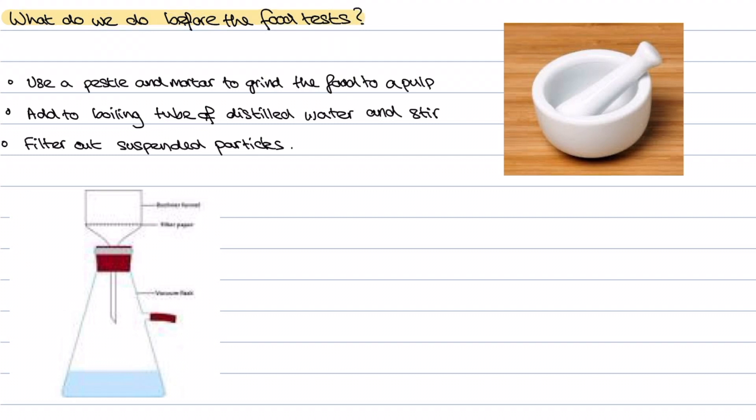First thing that we need to do is we use a pestle and mortar to grind our normal food up to a pulp. The next thing we do is we're going to add it to a boiling tube filled with distilled water and stir that together to create a solution. Then we're going to use this filtration apparatus to get rid of any suspended food particles and that's going to give us this solution of food and then we can add our various reagents to it to conduct food tests.